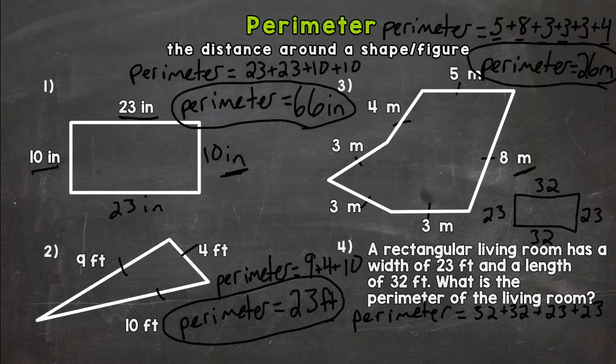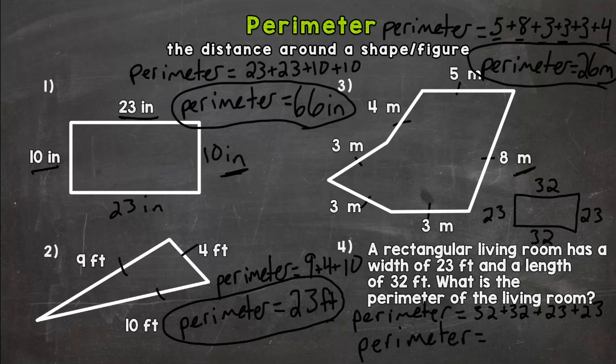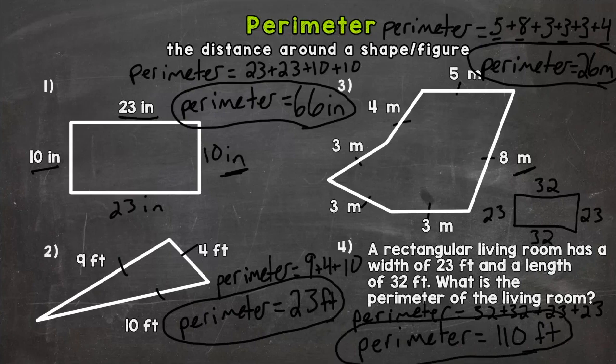So if you get a perimeter problem where you have larger numbers and you need to go off to the side to do some calculations, that's fine. You don't always have to use mental math and you won't always be able to use mental math when you're finding perimeter. So 32 plus 32 is 64 plus 23 plus 23 and we get to 110. And our unit of measure is feet. So the perimeter of that living room is 110 feet.